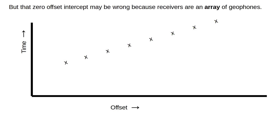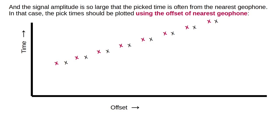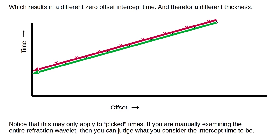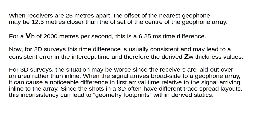But that zero offset intercept may be wrong because receivers are an array of geophones, and the signal amplitude is so large that the pick time is often from the nearest geophone. In that case, the pick time should be plotted using the offset of the nearest geophone, which results in a different zero offset intercept time, and therefore a different weathering thickness. Note that this may only apply to pick times — if you are manually examining the entire refraction wavelength, you can judge what you consider the intercept time to be. When receivers are 25 meters apart, the offset of the nearest geophone may be 12.5 meters closer than the offset of the center of the geophone array.